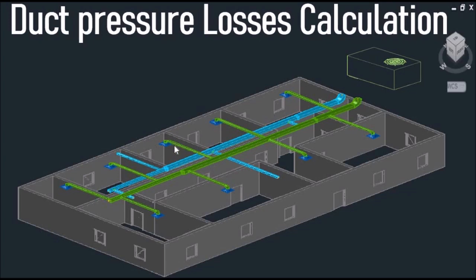To simplify this example, we will use a simple residential house which includes a laundry room, kitchen, a bath, a dining room, a living room with a corridor, and 3 bedrooms.